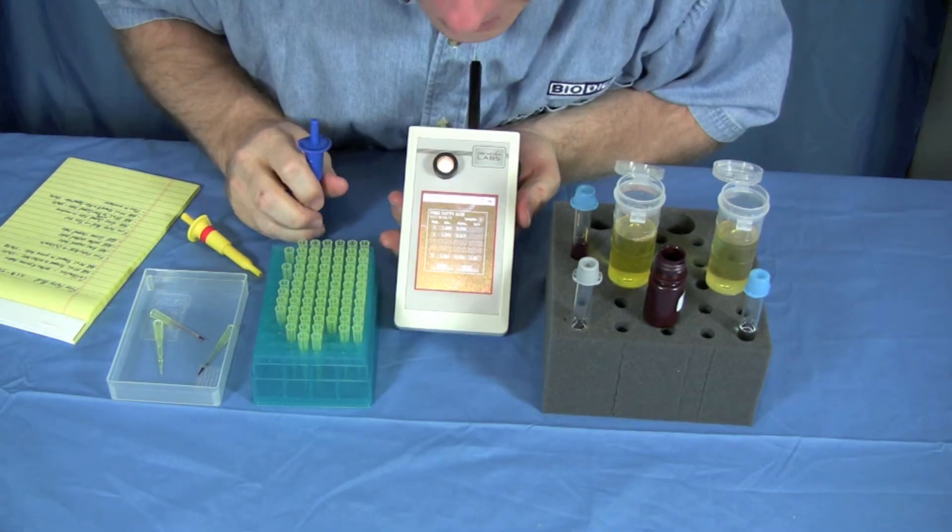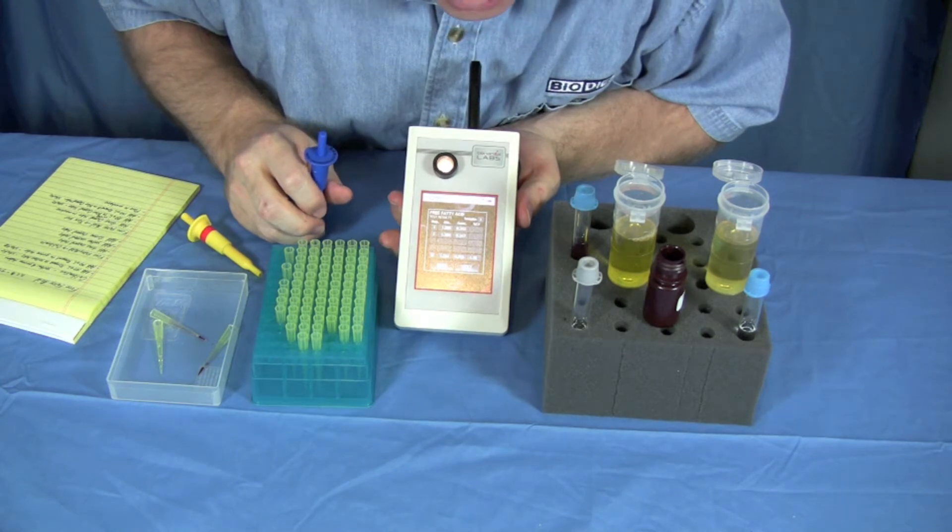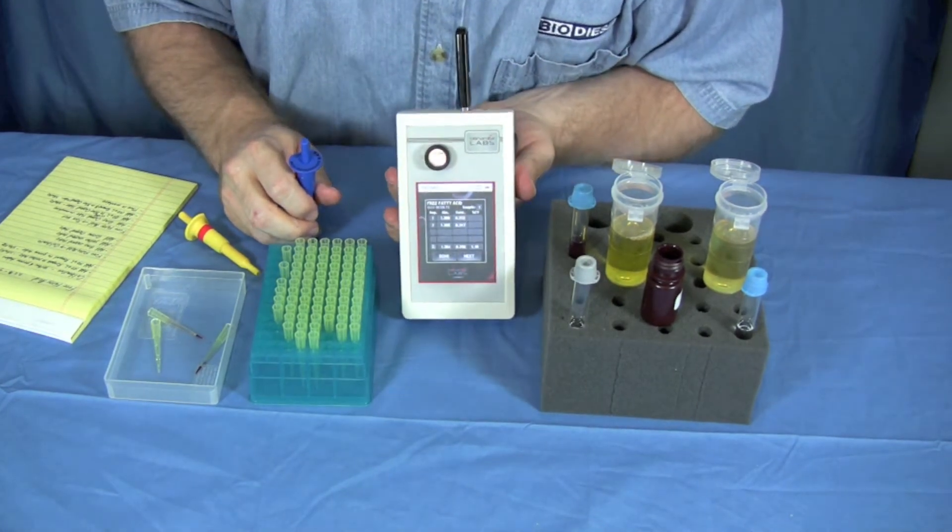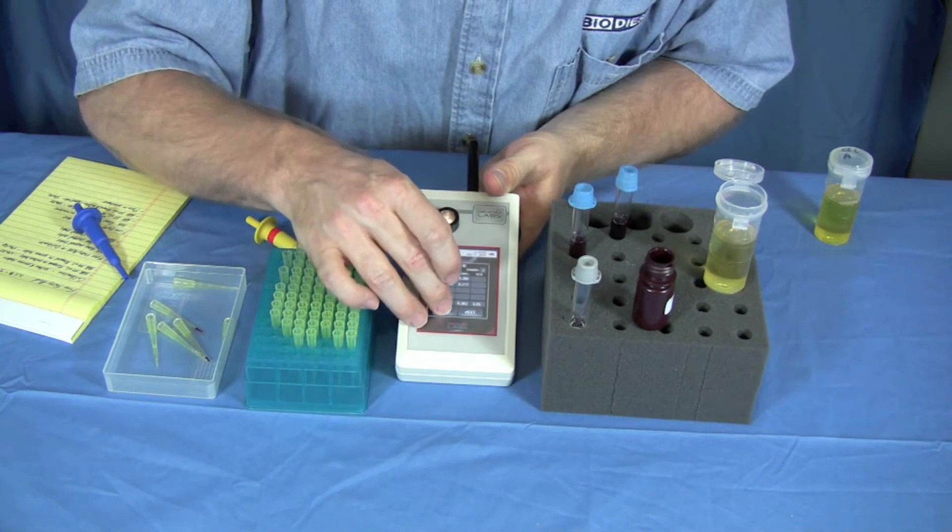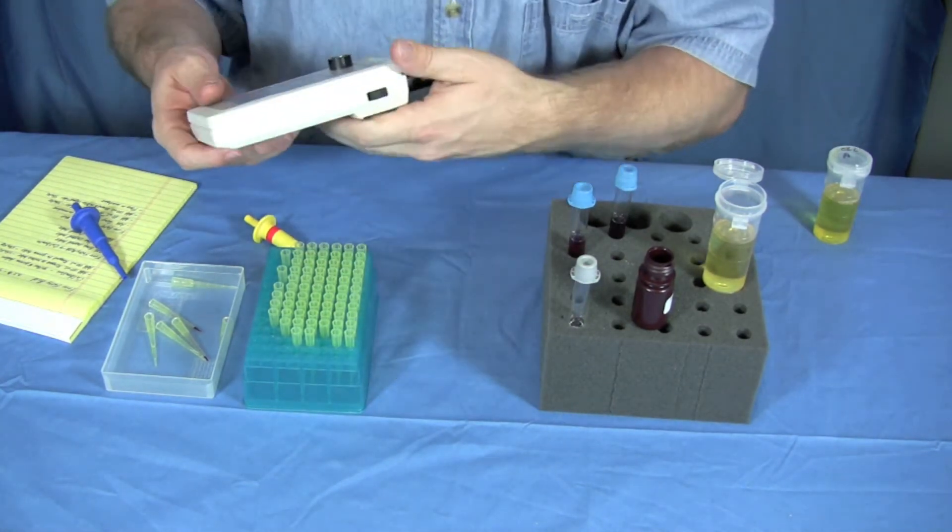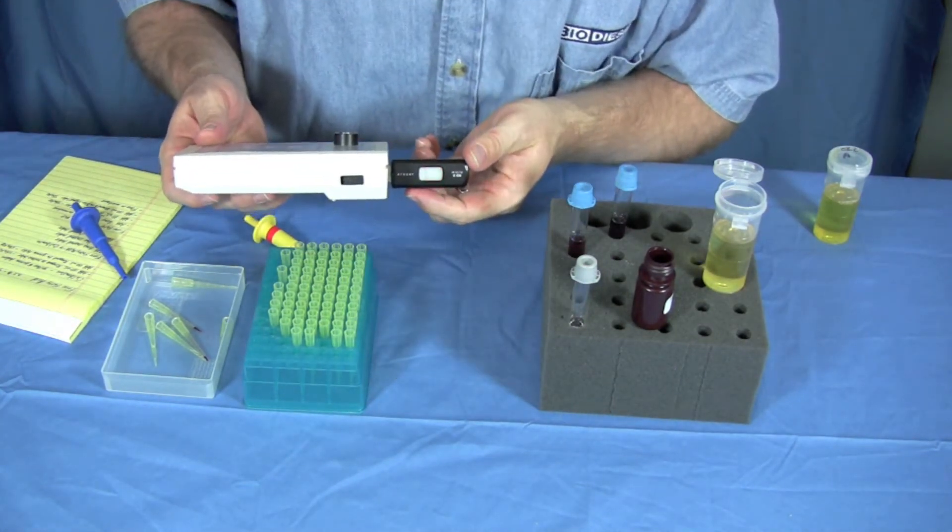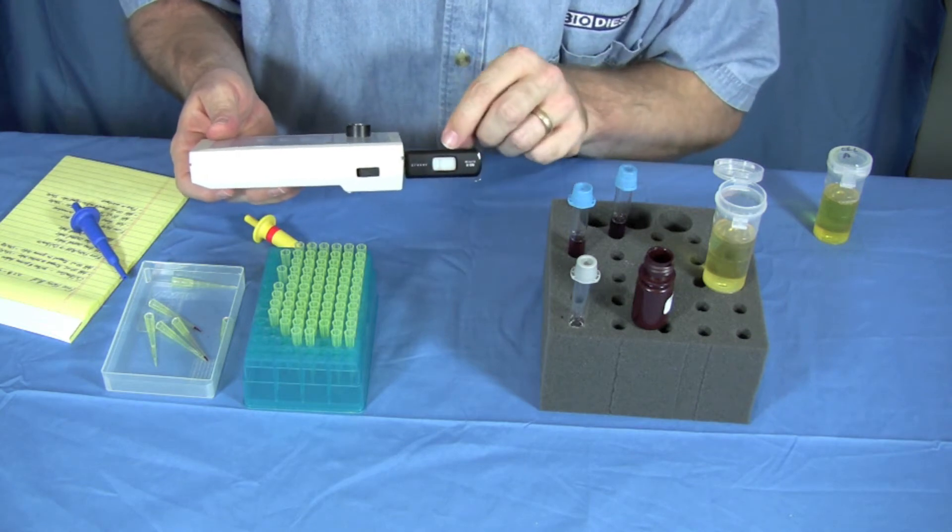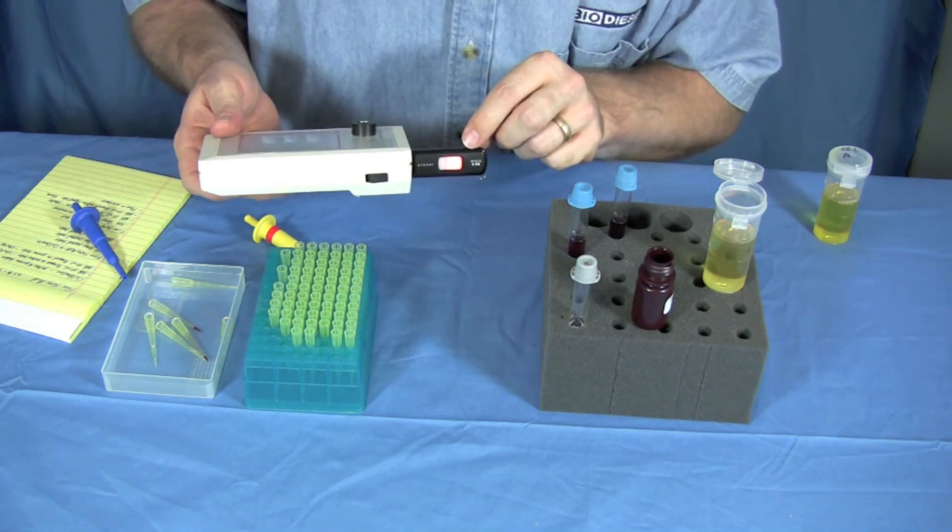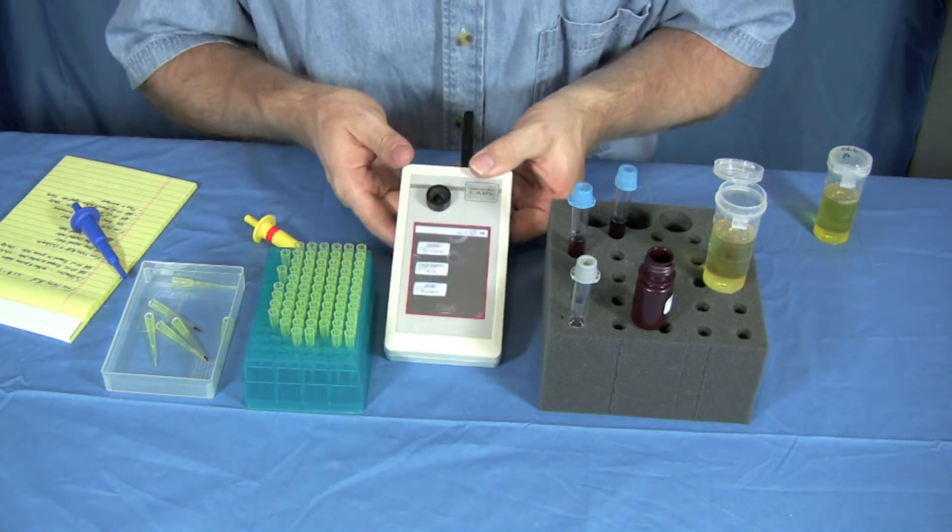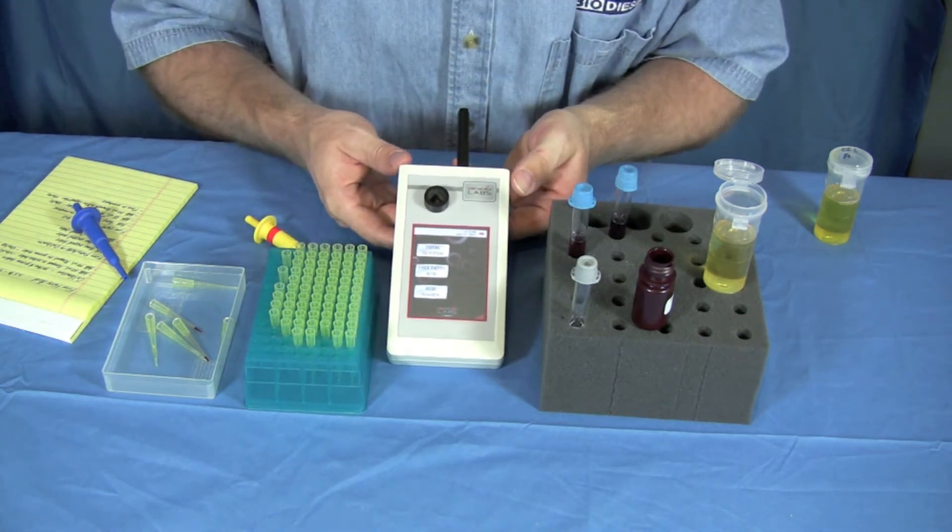So this is 0.35 percent. That's incredibly good oil. We're going to choose done at this point and the machine itself is now going to feed this data right onto this card that we'll be able to look at later in a computer. And that's really how simple it is to do free fatty acid testing.